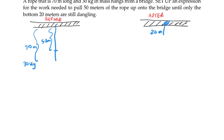I like to think about these rope problems by cutting up my rope into small segments and figuring out how much work is done on each segment. Usually I like to set them up using a variable, say x, where x equals 0 is at the top of the rope. So in this case, x equals 50 is at the 50-meter mark and x equals 70 is down at the bottom of the rope.